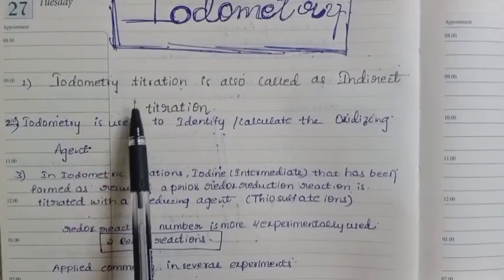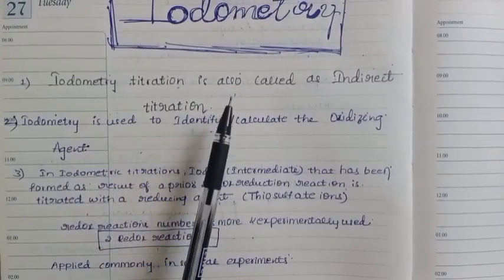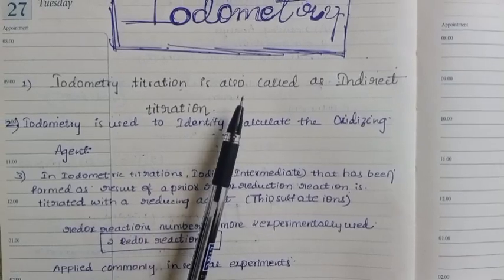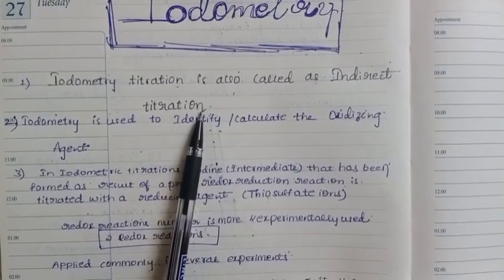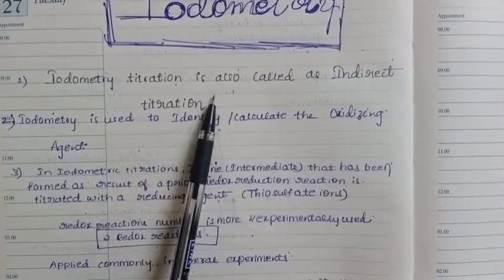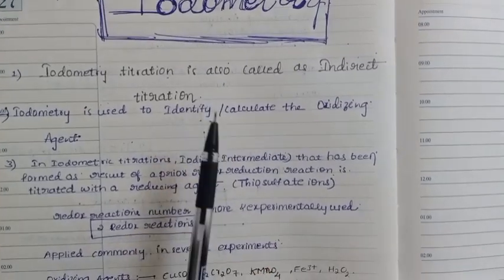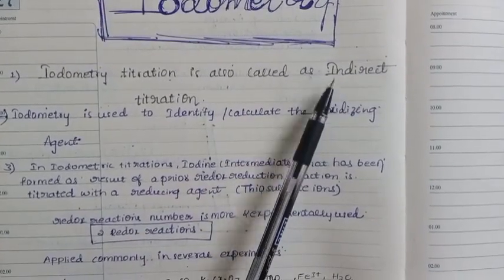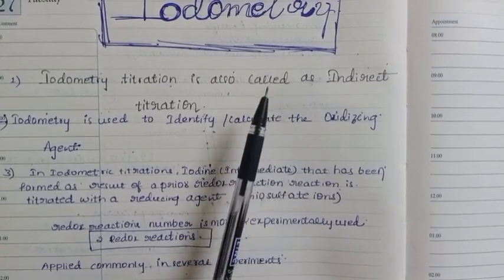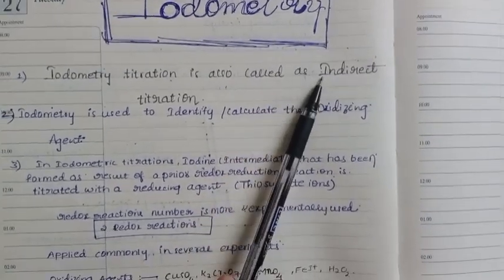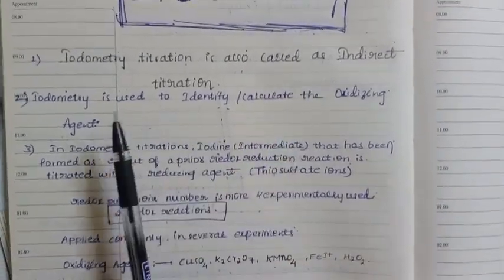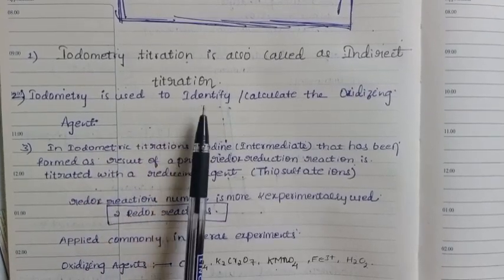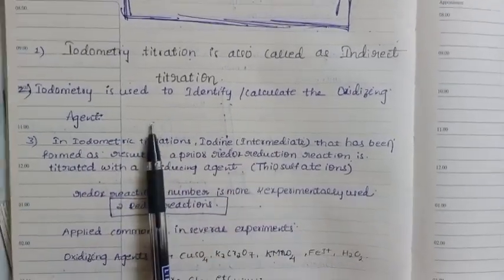Iodometry is also called indirect titration. These titrations are indirect titrations. Iodometry is used to identify or calculate the oxidizing agent.